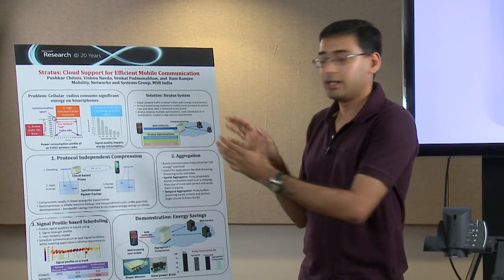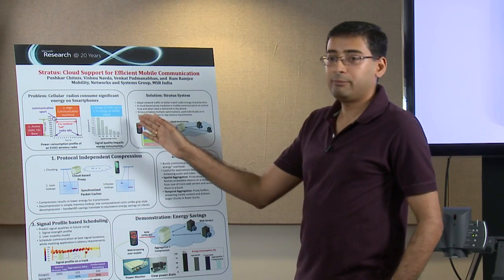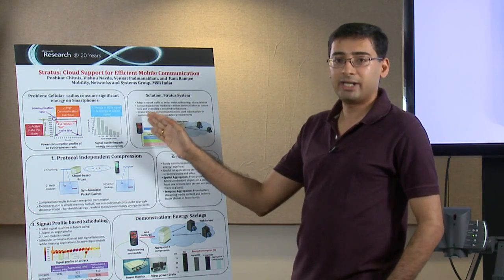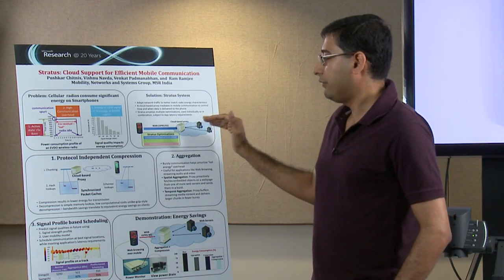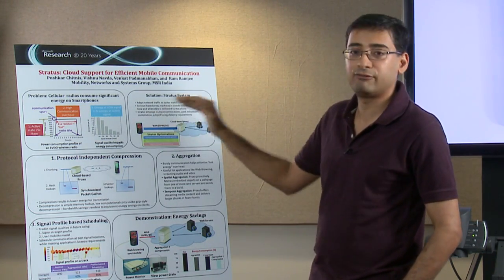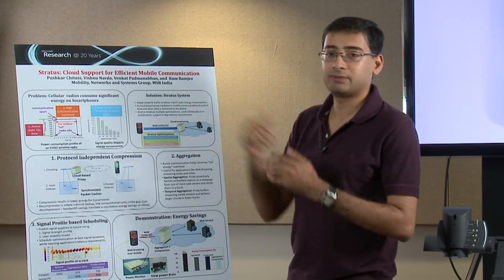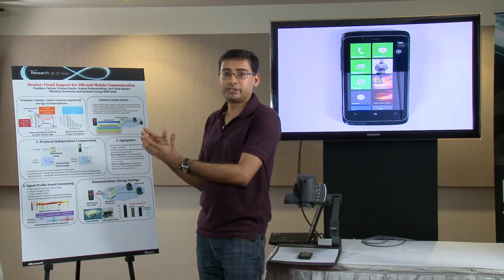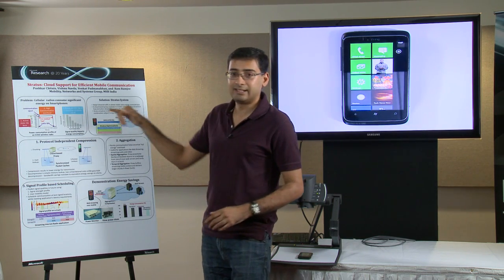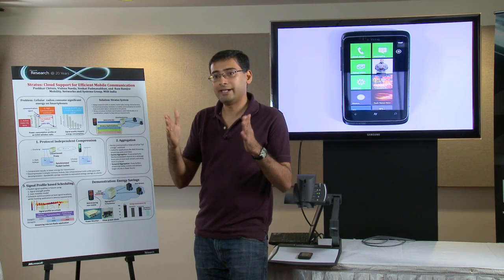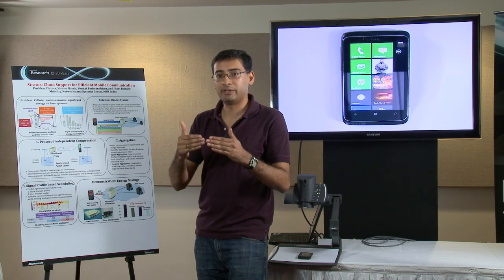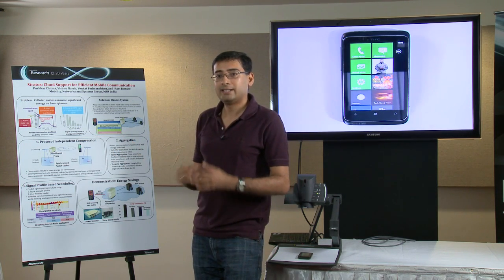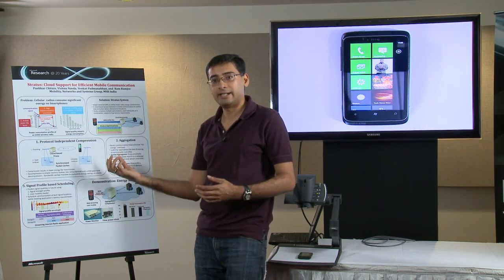The key idea is to shape your network traffic to better match the energy characteristics of a cellular interface. In Stratus, we leverage a proxy in the network acting as an intermediary between the phone and the internet. All traffic sent and received by the phone is mediated by this proxy. We employ several optimizations on the link between the proxy and the phone to get energy savings as well as byte savings. We employ compression to reduce the number of bytes transferred, reducing the time the radio is active. Decompression on the phone is designed to be very efficient so that bandwidth saving translates to energy savings.